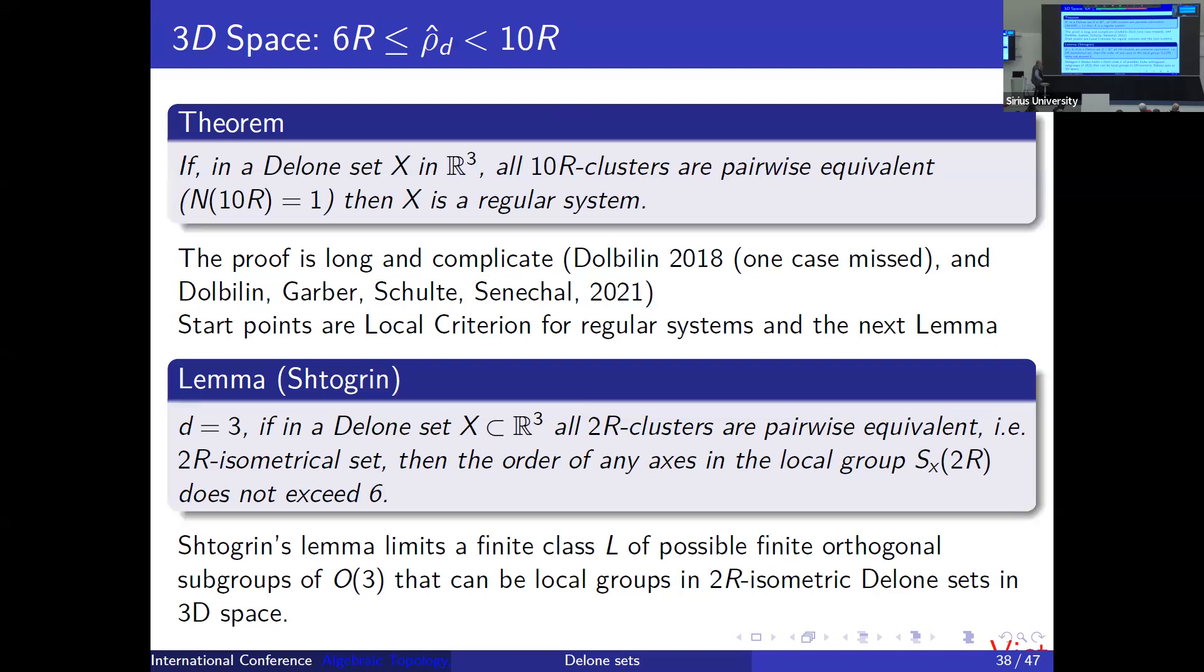Moreover, if in our Delone set we know that any 2R cluster is center symmetrical, then we don't require any equivalence of different clusters. Anyway, this X is a crystal. Moreover, this crystal is a union of lattices not bigger than 2^(d-1). In the two-dimensional case, it turns out that if we require equivalence of 4R clusters, then this system is regular. Moreover, if we require the congruence of smaller clusters by ε, for 4R minus ε, you can always find a non-regular system in which these clusters are the same. In the three-dimensional case, the situation is much more complicated, but we know that the radius 6R minus ε doesn't suffice for regularity. The upper bound for dimension three is so far 10R.